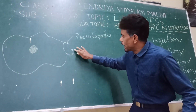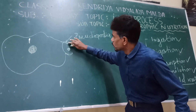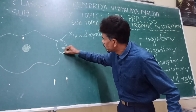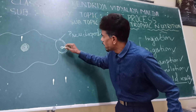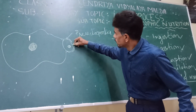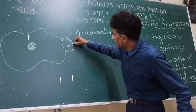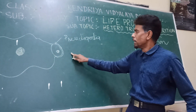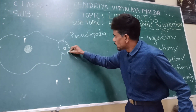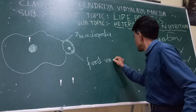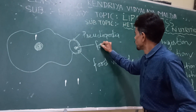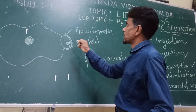The pseudopodia from both sides continue to encircle the food material — almost encircled, but not completed yet. As the extension continues, the extended parts of the pseudopodia from both sides meet with each other, thereby totally capturing the food particle and forming a structure called the food vacuole. The food material is now engulfed inside — this is the process of ingestion.